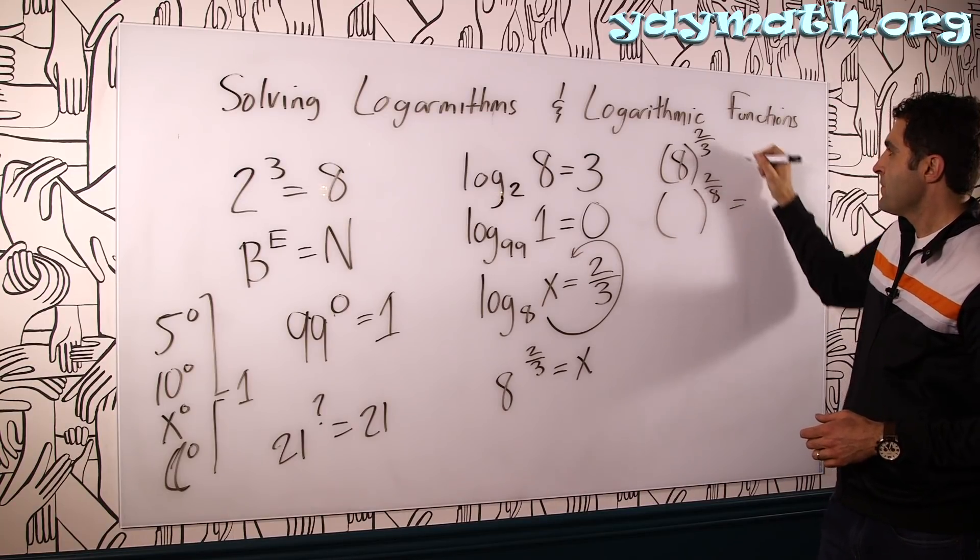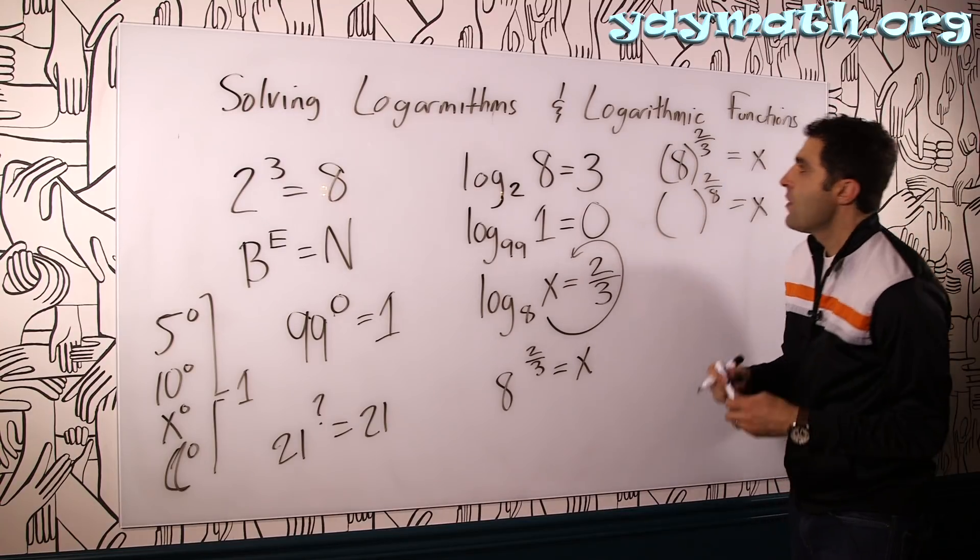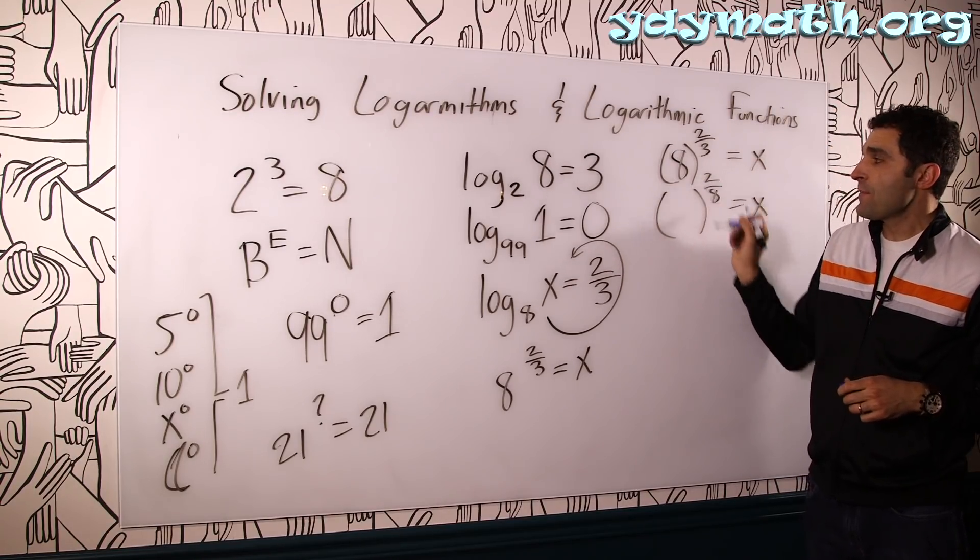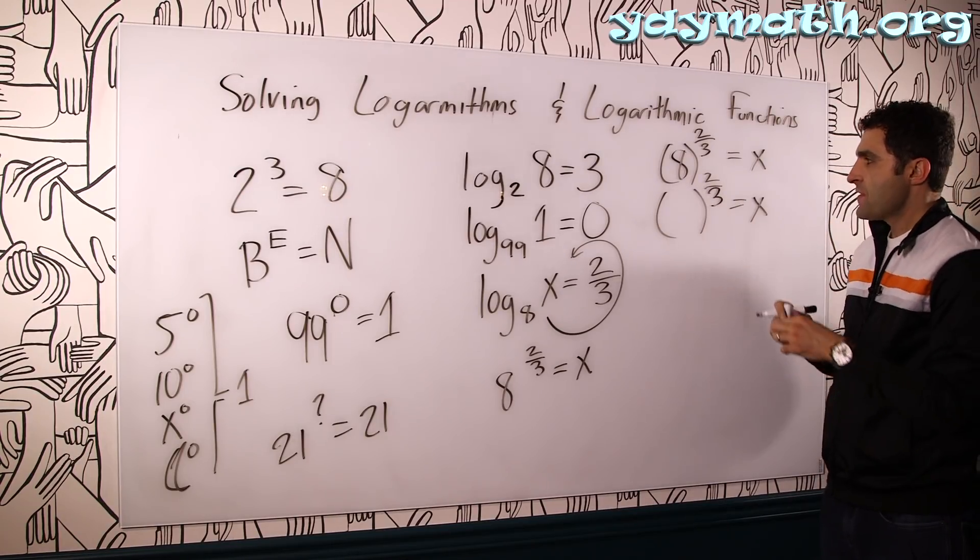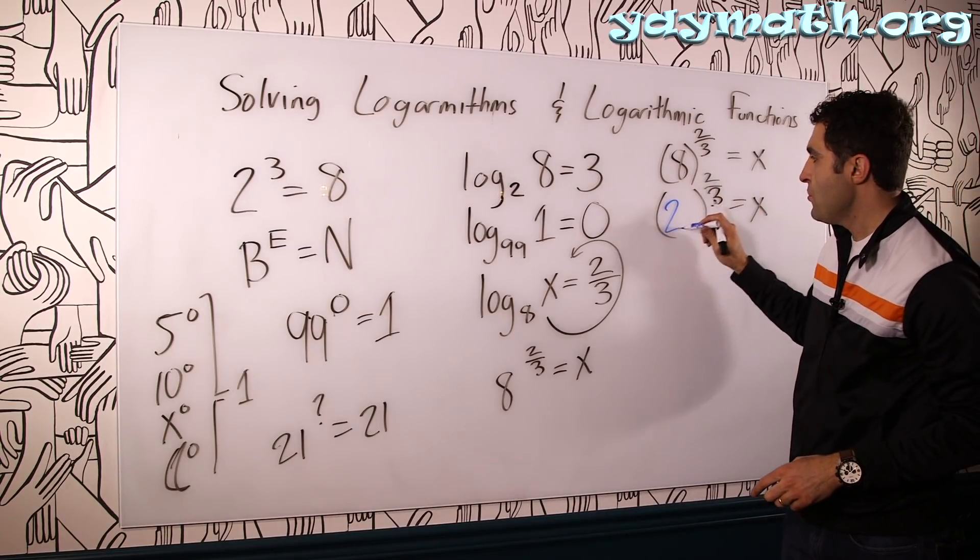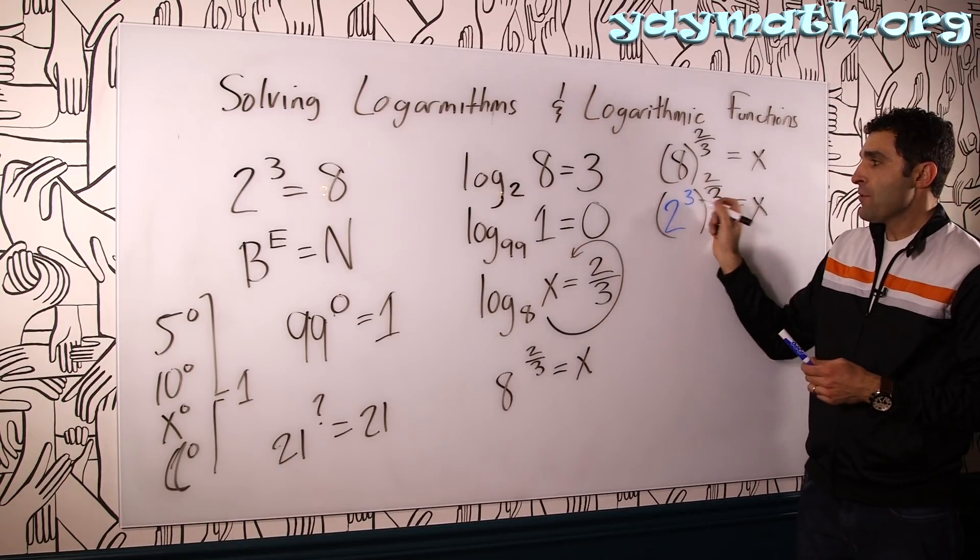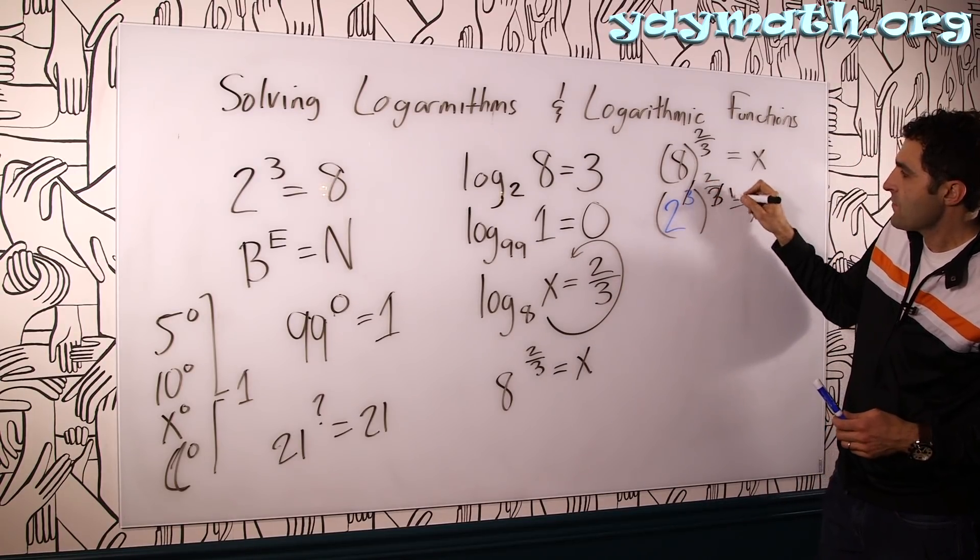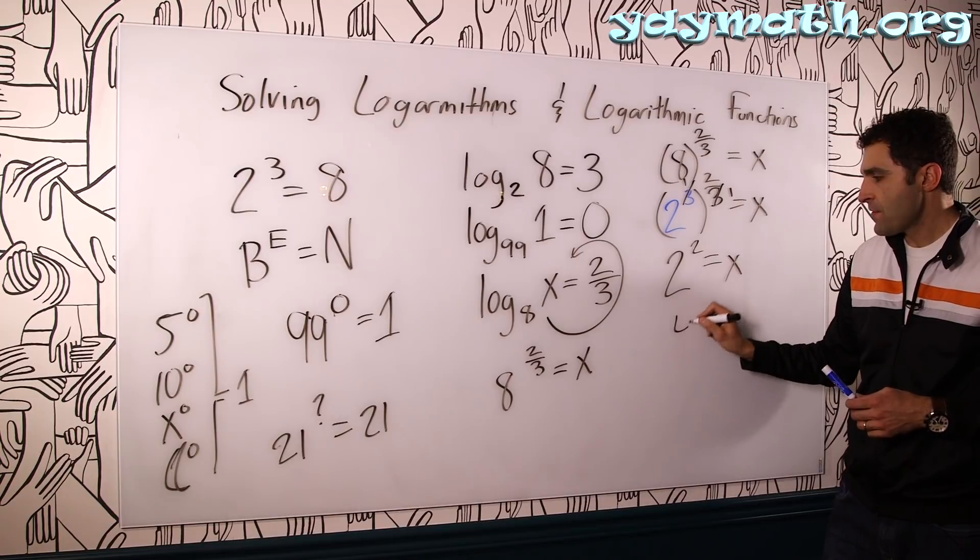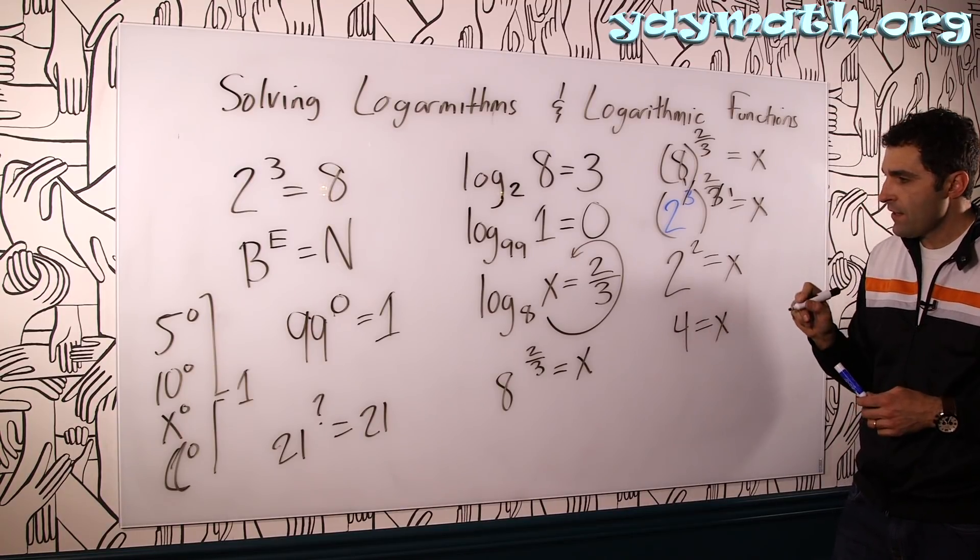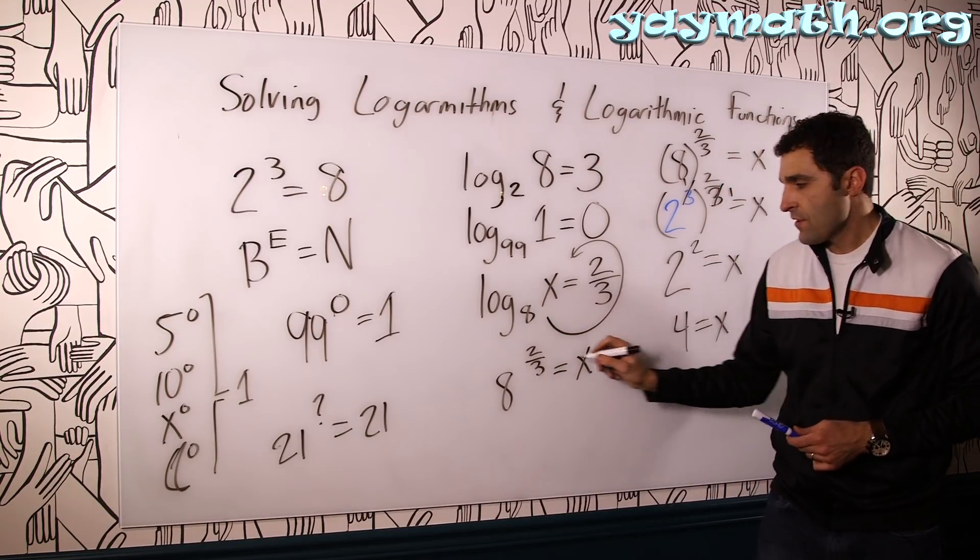Now, multiple ways to solve this. One method is to use exponents to our advantage. Let's say I wanted to have 8 to the 2 thirds. And instead of 8, I'm going to write 8 as an exponent. What is 8 written as an exponent? Something to the something that's 8. That's 2 cubed, as you see over here. Powers to powers. These numbers will multiply, resulting in 1. So that's 2 squared is x. So this becomes 4. So the way to say it, log base 8 of 4 is 2 thirds.